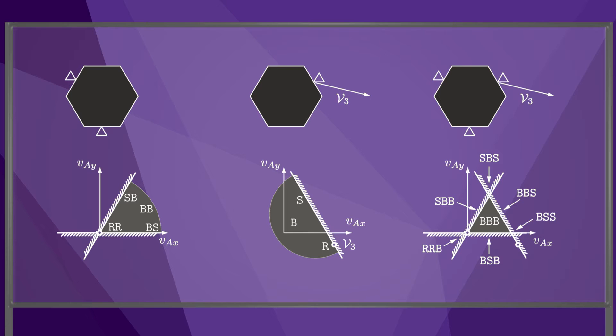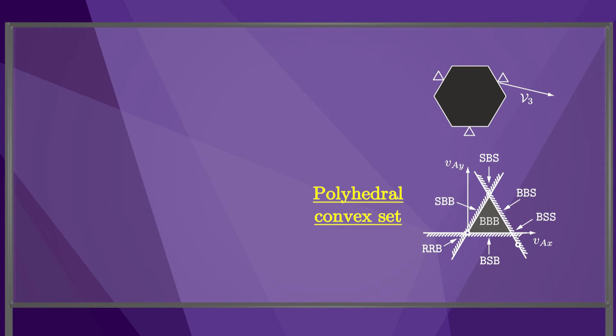Since the sliding constraint surfaces do not all pass through the origin, the set of feasible twists is no longer a cone, but a more general polyhedral convex set.